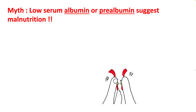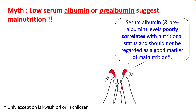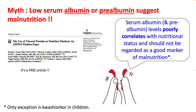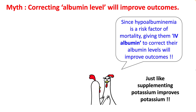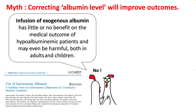Let's talk about another myth: that low serum albumin or prealbumin suggests malnutrition. It has now been clearly shown that serum albumin and prealbumin levels poorly correlate with nutritional status and should not be used as good markers for malnutrition. I would suggest reading the referenced paper, which makes this point very clear. Another myth: correcting albumin levels will improve outcomes. Since we know that low albumin is a risk factor for mortality, correcting it by giving IV albumin should help — however, this is not true.